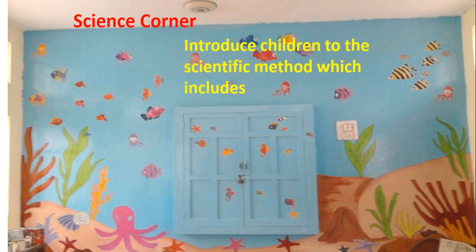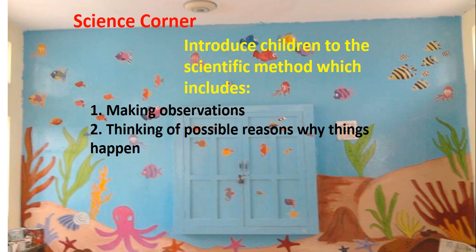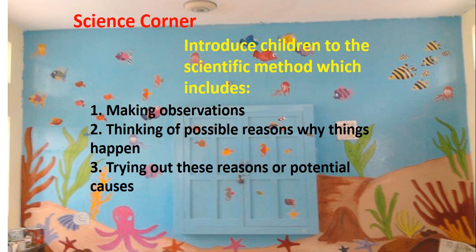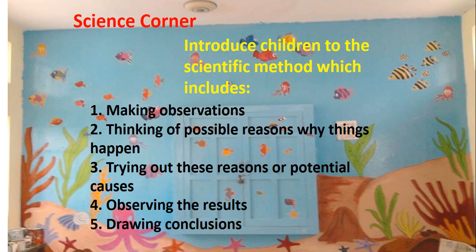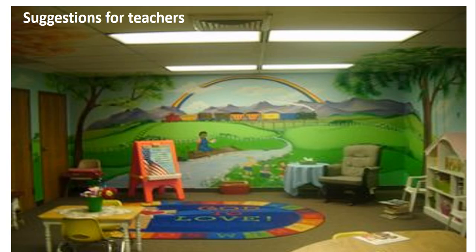Number one: making observations. Number two: thinking of possible reasons why things happen. Number three: trying out these reasons or potential causes. Number four: observing the results. Number five: drawing conclusions. Here I have a few suggestions on how you can spend your time with your students in the science corner.